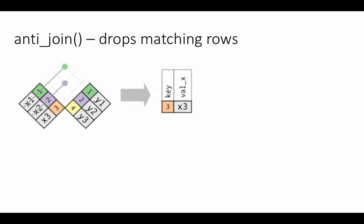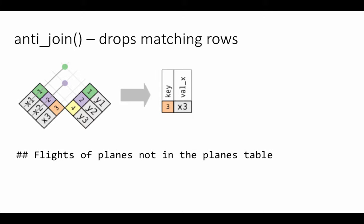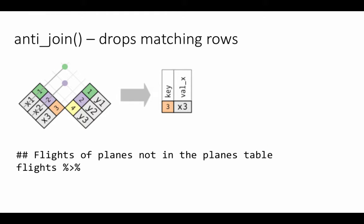These two operations are also sometimes pretty useful when doing all kinds of operations where just finding a match is what matters. For example, if you want to find flights of planes which are not in the planes table: the flights table has a tail number to indicate which plane was used, and the planes table lists all planes. One would expect all flights used planes that exist in the planes table.